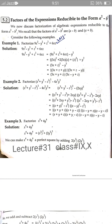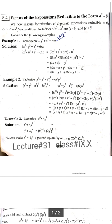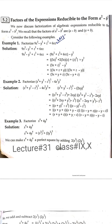Assalamu alaikum dear students, today is lecture number 31 of class 9th and matric. In the last lecture we started chapter number 5 and solved exercise 5.1. Now moving forward to exercise 5.2, and the topic is factors of algebraic expressions reducible to the form a² minus b².